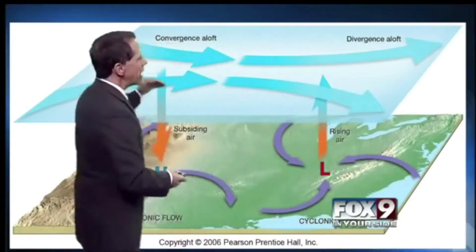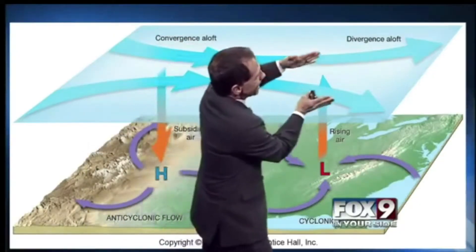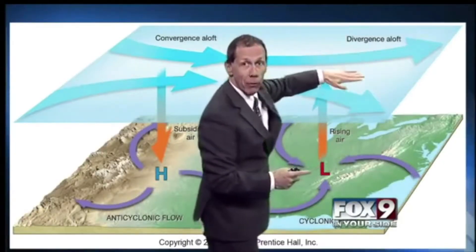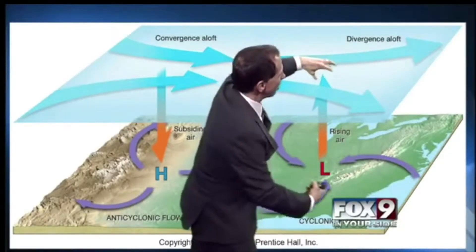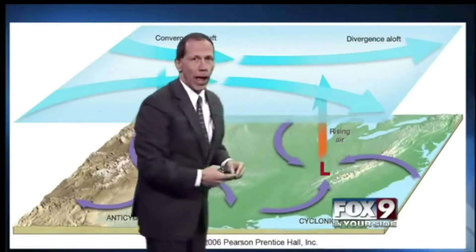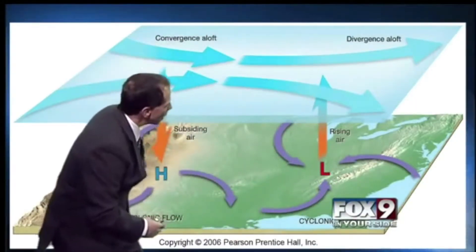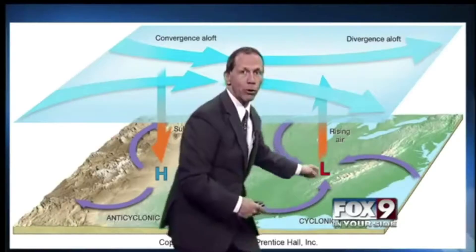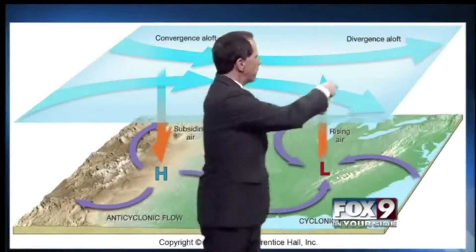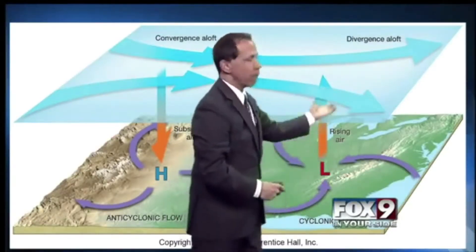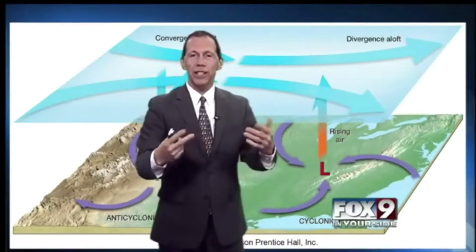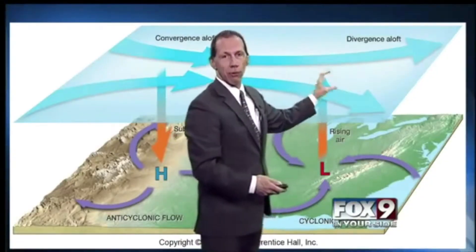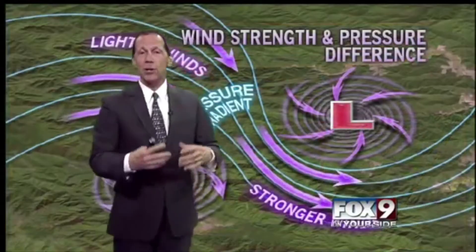As the jet stream continues, it reaches an area where it diverges aloft, separating the air. We can't have a void — we can't make a vacuum — so something has to replace that air, and air comes up from the ground. High pressure nearby sends wind into low pressure counterclockwise; it gets to the middle with nowhere else to go and rises to fill the void. Near low pressure, we have rising air, and rising air cools, condenses, makes clouds and precipitation.